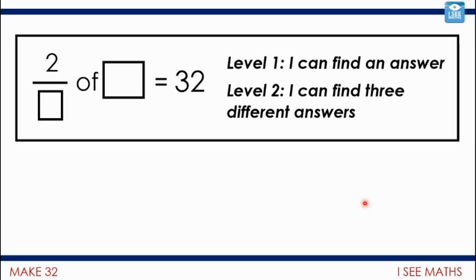For everyone still with us - this is your main task and it's really challenging. The numerator is two, we don't know what the denominator is, and we don't know the amount, but we know the result is 32. Level one: find one answer. Level two: find three different answers - there are many possible answers. My suggestion is for most of you to look at the next picture for a clue, though some will want to jump straight in.